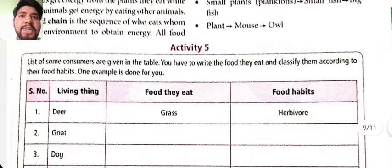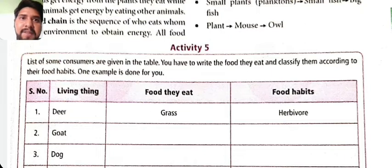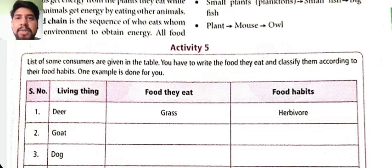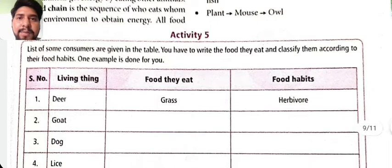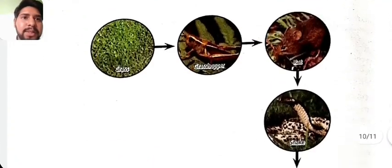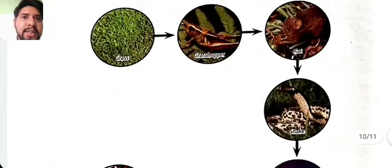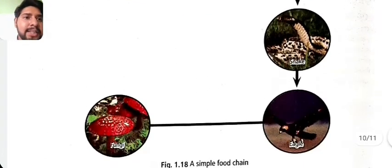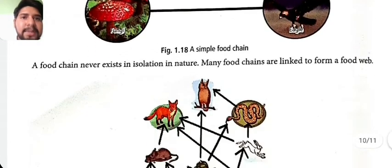Activity: A list of some consumers is given in the table. Write the food they eat and classify them according to their food habits. For example, deer eats grass — food habit is herbivore; goat eats grass — herbivore. Complete the table. A simple food chain example: grass → grasshopper → rat → snake → eagle.